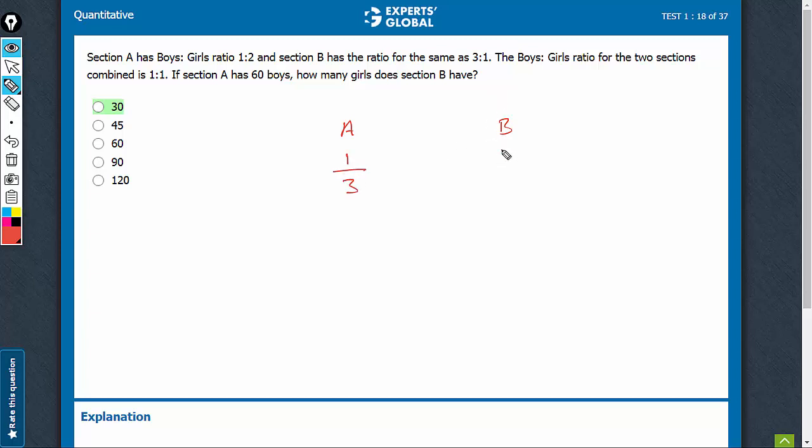In B, the boys are 3 out of 3 plus 1, which is 4. Together, the ratio is 1 to 1. So, 1 out of 1 plus 1, 2.